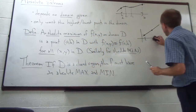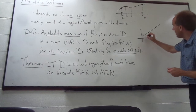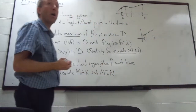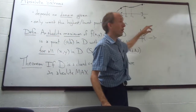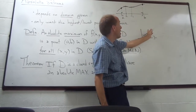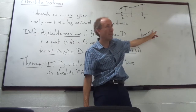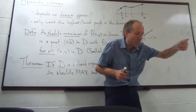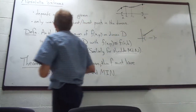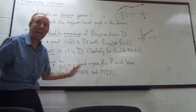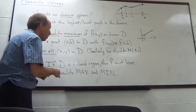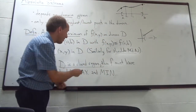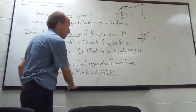If you don't include the boundary — if you don't include the edge of the domain — it's possible this function has no absolute maximum or minimum at all. There is no highest or lowest point on an open interval, because you can get arbitrarily close to the open endpoint without reaching it. So to guarantee an absolute maximum or minimum, you need a closed region where the boundary is included.